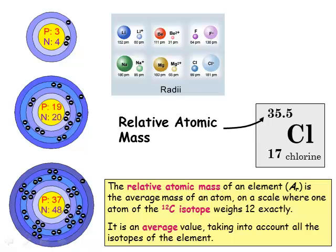Because atoms are so small, it's not convenient to use grams to measure their mass. So instead, we use the mass of an atom of carbon-12 as our standard, and compare the masses of other atoms to this.